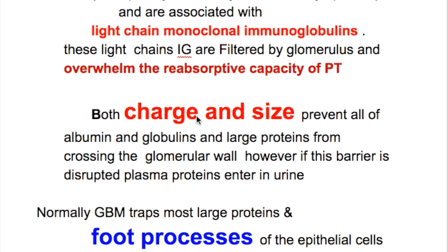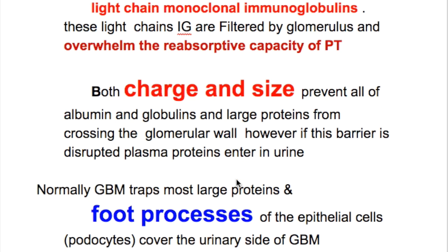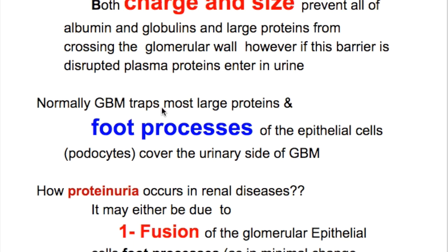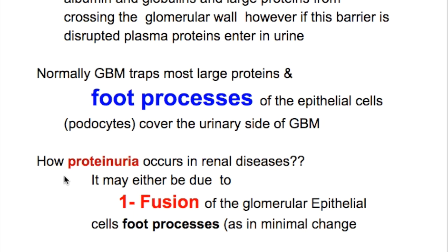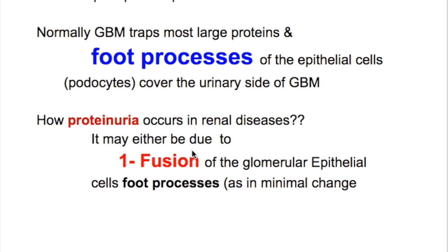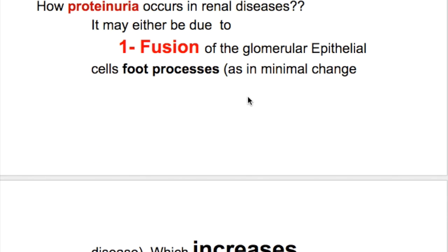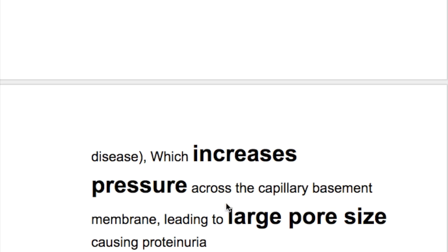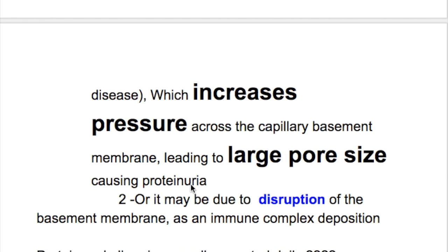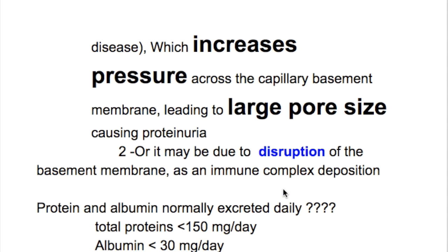Albumin has a highly negative charge but is small in size. However, if the glomerular barrier is disrupted, plasma protein enters the urine. Normally, the glomerular basement membrane traps most large proteins and the foot processes are on the urinary side. Proteinuria in renal disease may be due to fusion of the glomerular epithelial cell foot processes, as in minimal change disease, increasing pressure across the capillary basement membrane and causing a large pore size, or due to disruption of the basement membrane as in immune complex deposition.